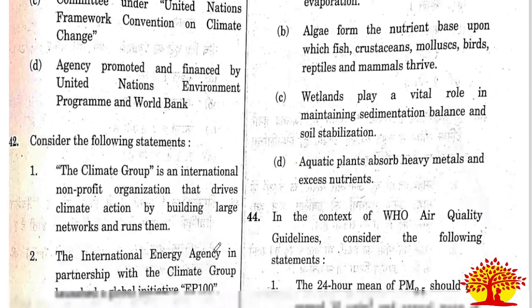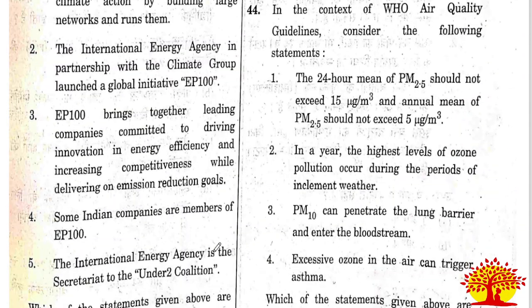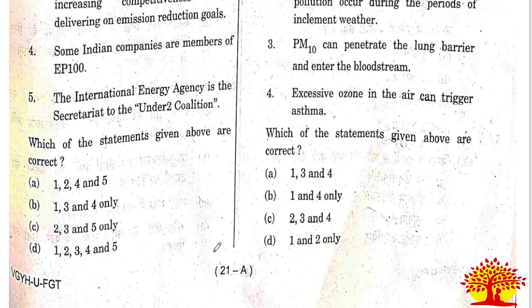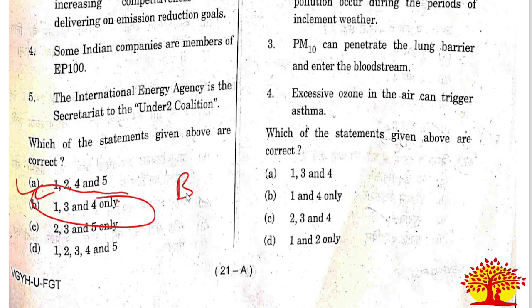Forty-second question on the international climate group EP100: Option B, statements 1, 3, and 4, are the correct ones. Statement 2 is wrong - it states that the International Energy Agency (IEA) is in partnership with the Climate Group and launched the EP100 initiative. The IEA has no link with EP100; EP100 is a coalition addressing climate change that works on similar objectives to IEA, but IEA has no role in EP100. Statement 2 and statement 5 are wrong.